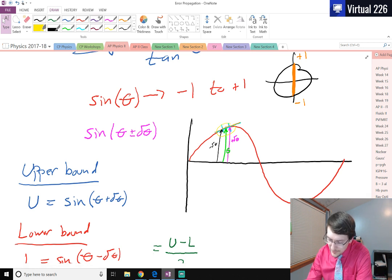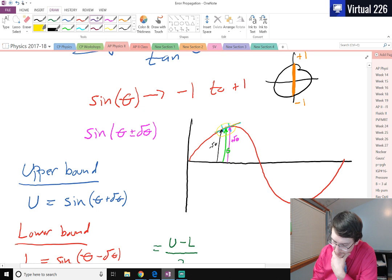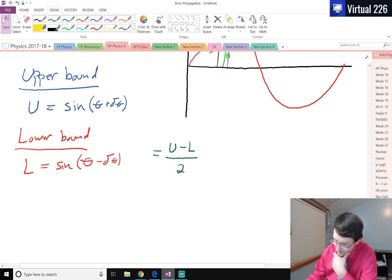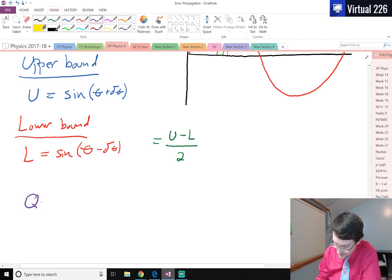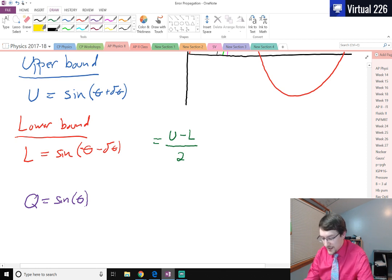So if sine of the function, if the function, when we pass a variable into it, if that gives us the value of q, if q is just the function, so sine of theta, then this upper minus lower divided by two, this is what the deviation on that value is.